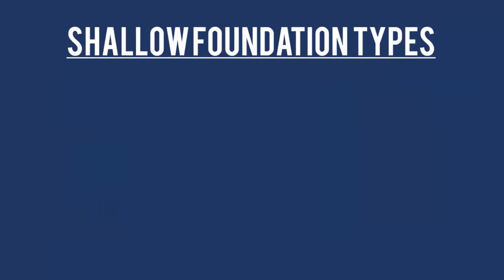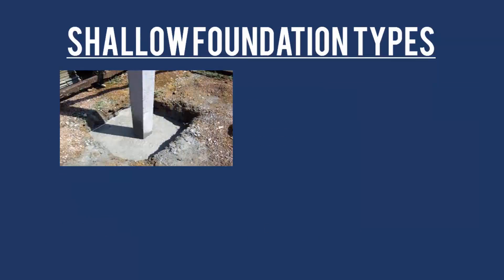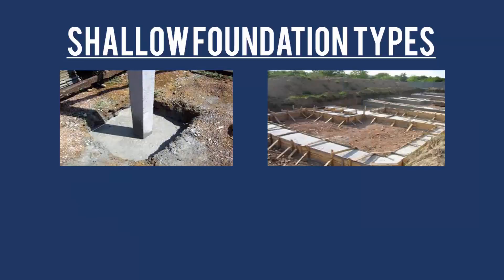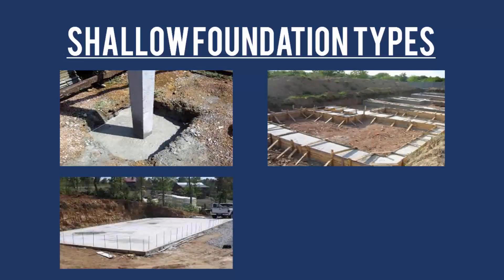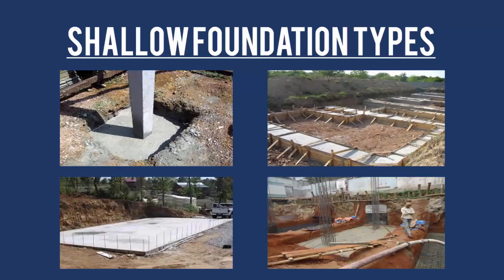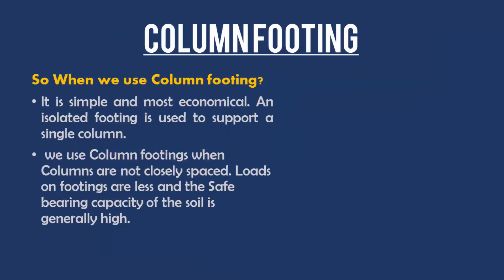Shallow foundation types: the first one is column footing, the second one is strip footing, the third one is mat foundation, and the fourth one is combined footing. Now we will talk about when we use each type of shallow foundation.